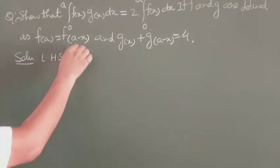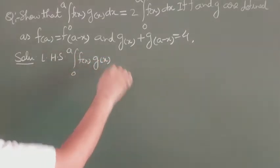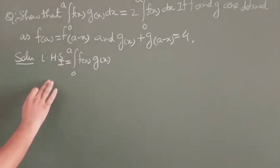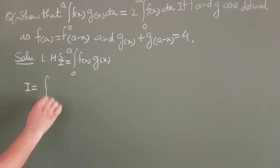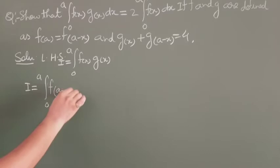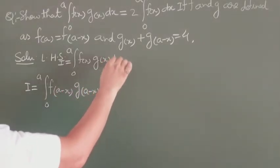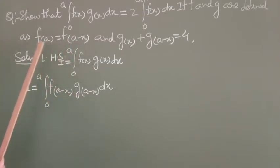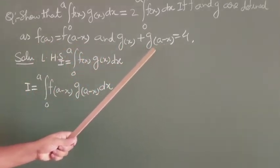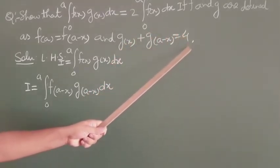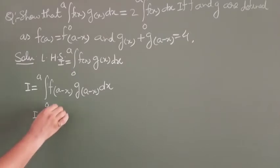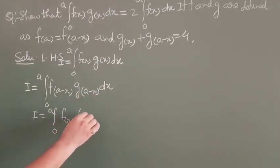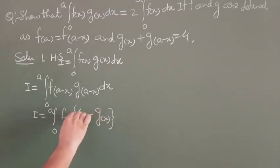To prove this, we take the LHS: I = ∫₀ᵃ f(x)·g(x) dx. We apply the property ∫₀ᵃ f(x)dx = ∫₀ᵃ f(a - x)dx, giving I = ∫₀ᵃ f(a - x)·g(a - x) dx. Now we substitute: since f(a - x) = f(x) and g(a - x) = 4 - g(x), we get I = ∫₀ᵃ f(x)·(4 - g(x)) dx.